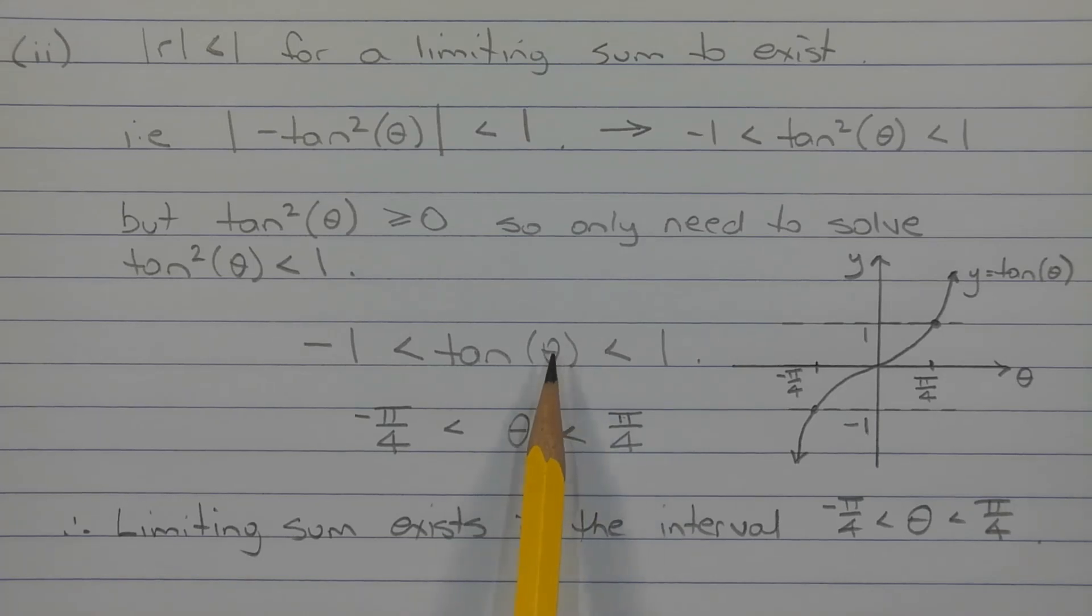Now the values of theta where tan theta equals negative 1 and 1 are negative pi over 4 and pi over 4 respectively. If we consider the graph of y equals tan theta, it's monotonic increasing in that interval.